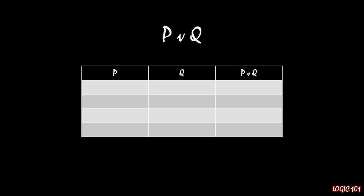Step three is to go through each and every possibility of truth values for the simple sentences. We have two simple sentences, so we have four combinations: P and Q can both be true; P true and Q false; P false and Q true; and both false. Then we go from left to right, filling in more complicated columns. Remembering from our lecture on disjunctions, P or Q is true when at least one of those simple sentences is true — even if both are true. So the first row, where P and Q are both true, we fill in true.